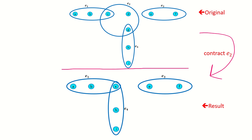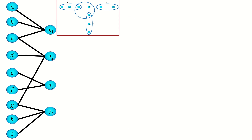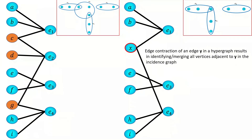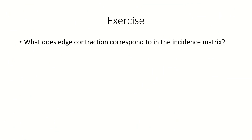So what's the effect of edge contraction on the incidence graph of a hypergraph? Here's the incidence graph of our example, and here's the incidence graph of the hypergraph resulting from the contraction of edge e sub 2. Essentially, what occurred to the incidence graphs was the ordinary graph notion of vertex identification, or merging, of the vertices adjacent to e sub 2 — which are c, d, and g — followed by the deletion of e sub 2. As another exercise, can you describe in the comments the effects of edge contraction on the incidence matrix?